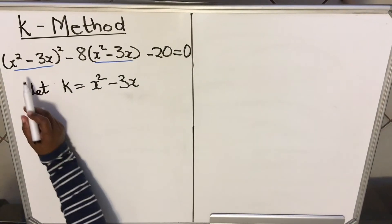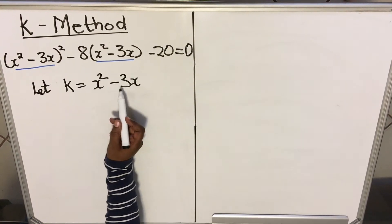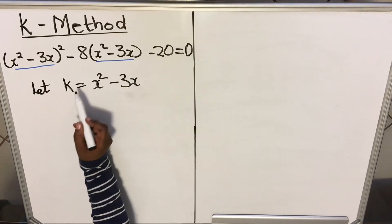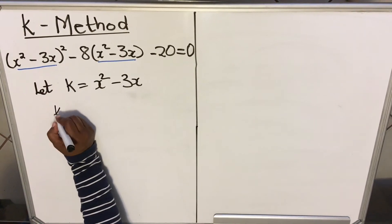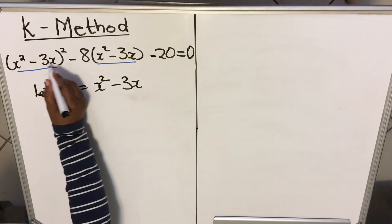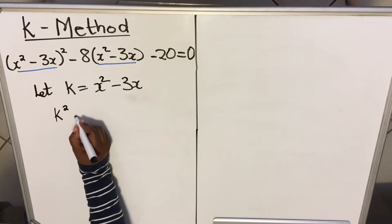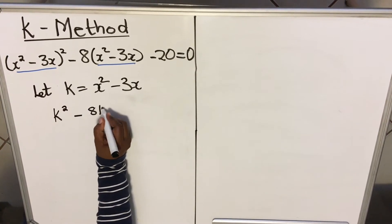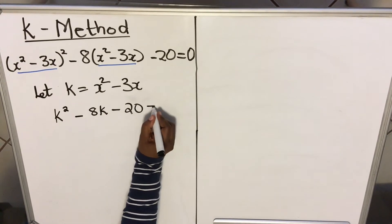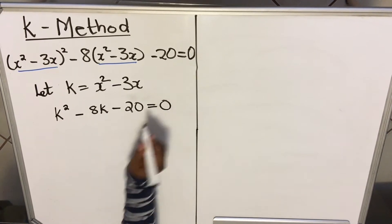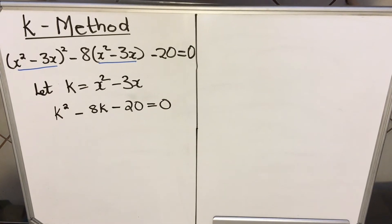What that means is: in my equation, wherever there is x squared minus 3x, I'm going to write k. So x squared minus 3x becomes k, but since x squared minus 3x is squared, it becomes k squared. So the equation becomes k squared minus 8k minus 20 equals 0.